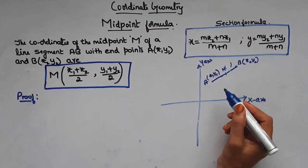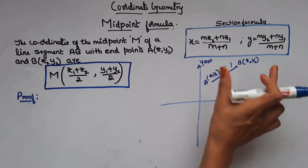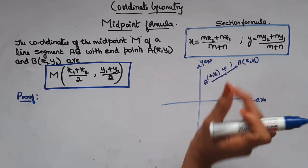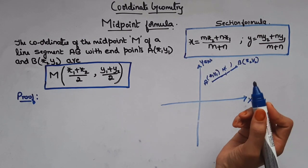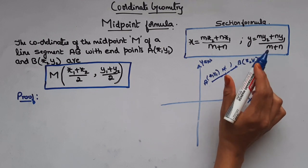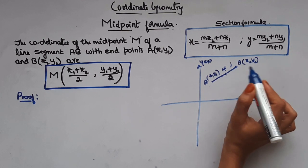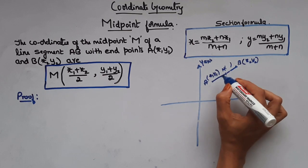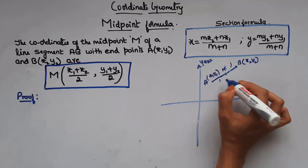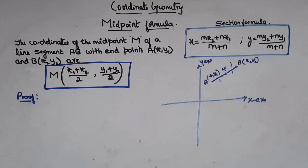In my previous video, we have seen the section formula which is given by this formula. There, the point P has divided the line segment in the ratio m:n. Here it says it's a midpoint, so that means it divides in the ratio 1:1.